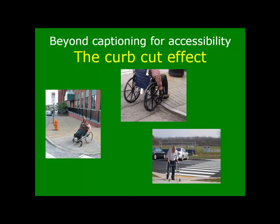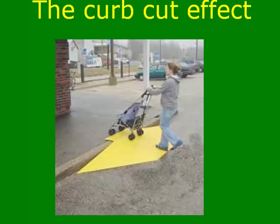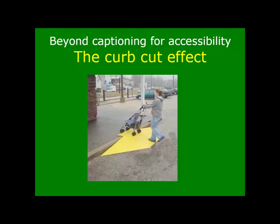There is another useful feature in YouTube: language translation. When curb cuts were first mandated for accessibility, there was a lot of concern over the cost to accommodate a relatively small minority. Once the curb cuts were in place, many non-disabled persons started to utilize them. This unintended benefit of accessibility legislation is called the curb cut effect.